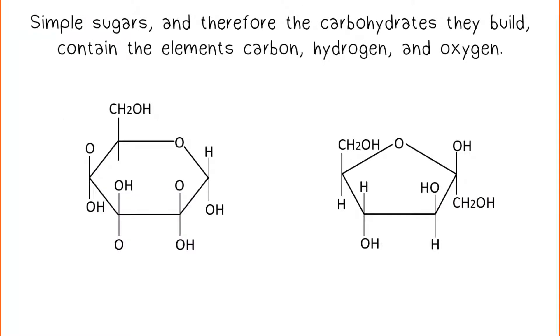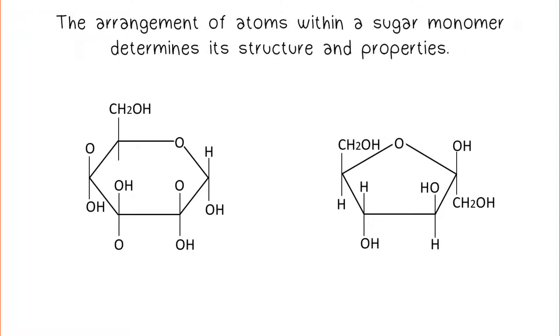Simple sugars, and therefore the carbohydrates they build, contain the elements carbon, hydrogen, and oxygen. The arrangement of atoms within a sugar monomer determines its structure and properties.